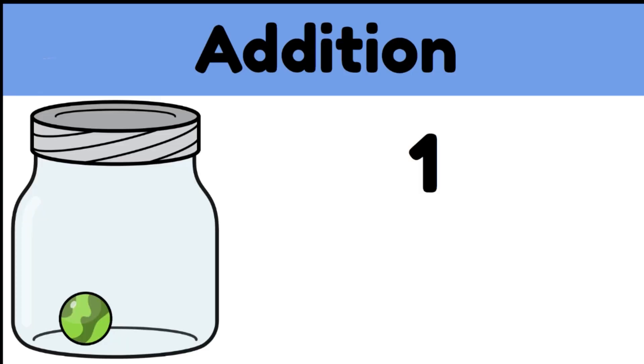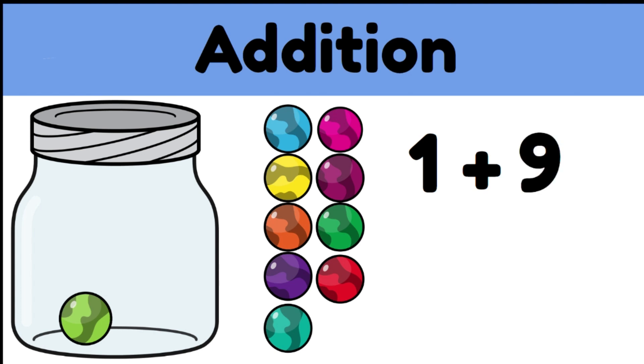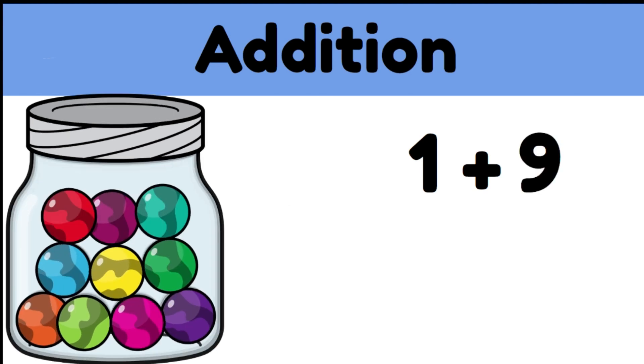Let's have a look at an example of addition using pictures. We have one marble in the jar and we're going to add nine more. Now we have ten marbles in the jar. One marble plus nine more gives us ten.